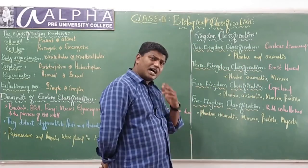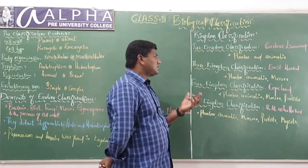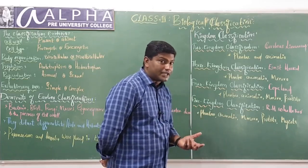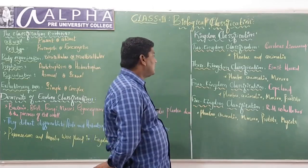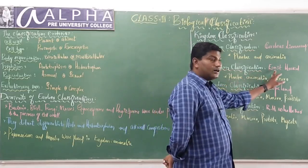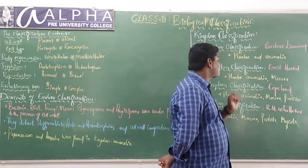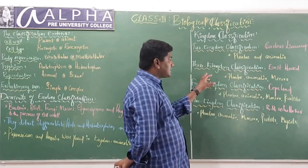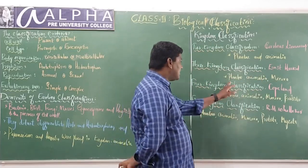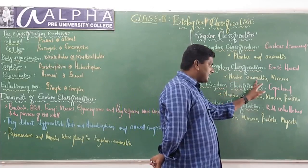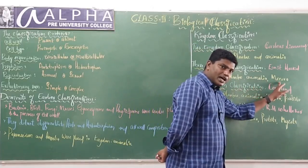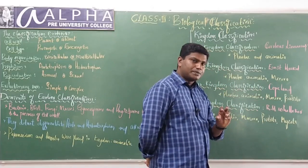After the invention of the microscope and the observation of microbes, the three kingdom system of classification was proposed by Ernst Haeckel. He classified all living organisms into three kingdoms: Kingdom Plantae, Kingdom Animalia, and Kingdom Monera, which comprised completely microscopic organisms.